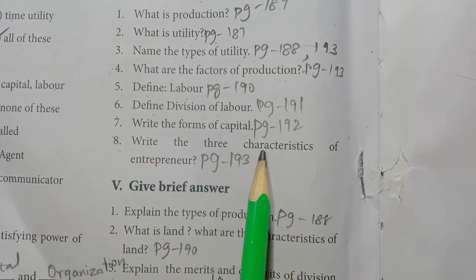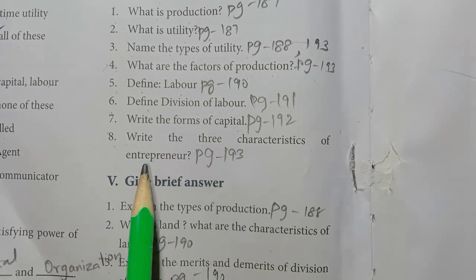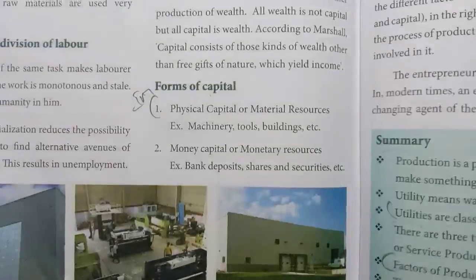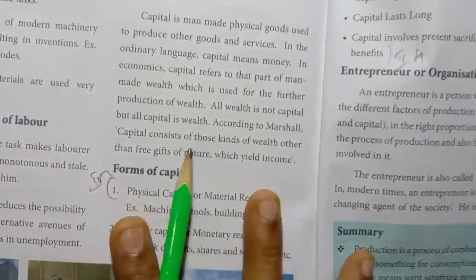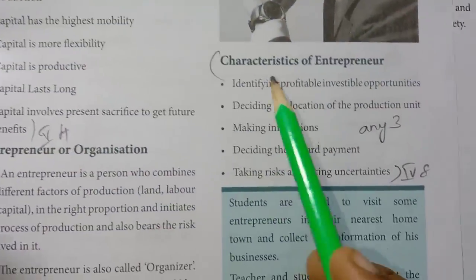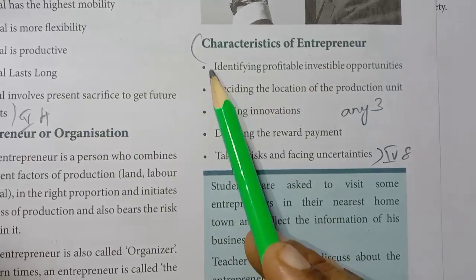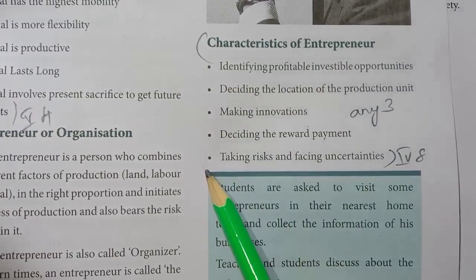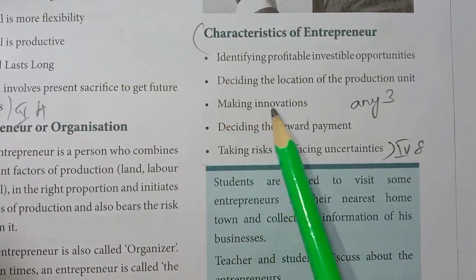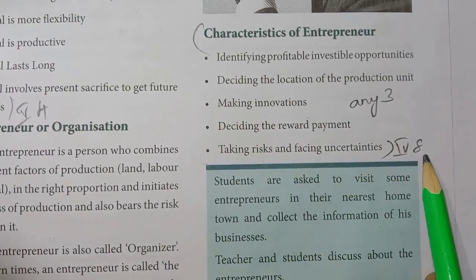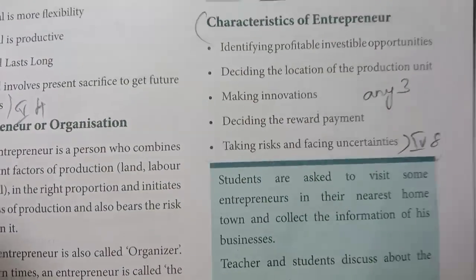Eighth one: Write the Three Characteristics of Entrepreneur. Page No. 193, under Characteristics of Entrepreneur — five points are given. You have to write any three points.